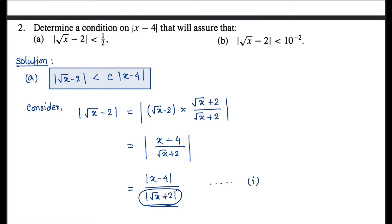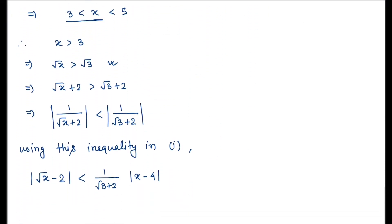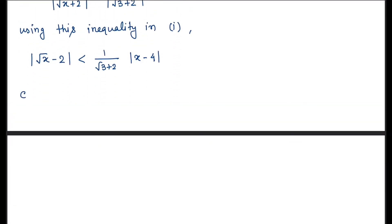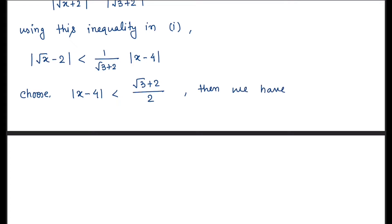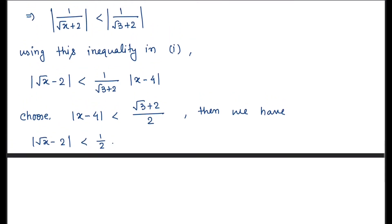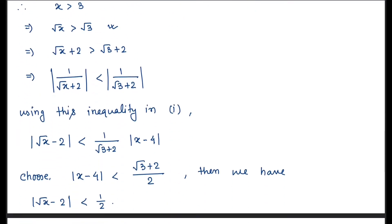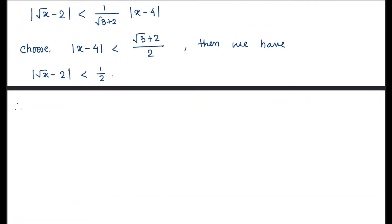Now the question says |√x - 2| must be less than 1/2. So what condition should we choose on |x - 4|? Choose |x - 4| < (√3 + 2)/2. Then we have |√x - 2| < 1/2. But remember, we also chose |x - 4| < 1 earlier, so we must take the minimum of both. Therefore delta = min(1, (√3 + 2)/2).